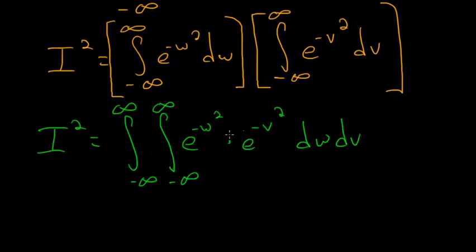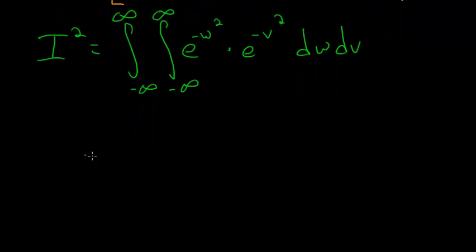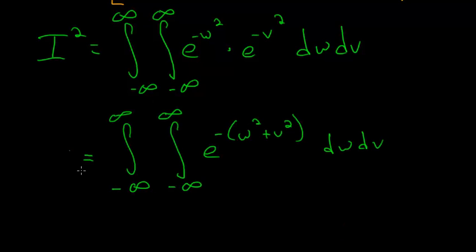And what I'll do next is just combine these into one exponent. So now we have that this is equal to this double integral. And notice that I combined the exponents and I factored out a negative one from each.